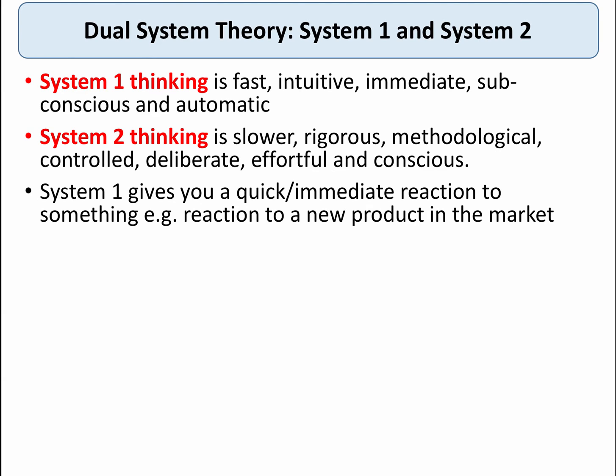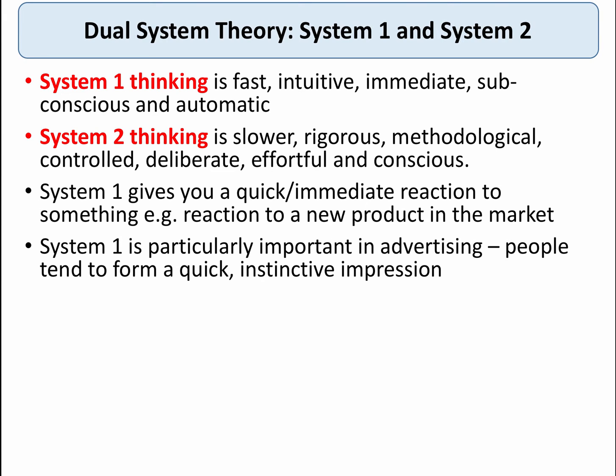System one gives you a very quick, immediate gut reaction to something — for example, how you react to a new product in the market. It's very important in advertising. People tend to form a very quick instinctive impression about some experience. Perhaps the first 30 seconds of their experience in a hotel has a disproportionate effect on how they think about their hotel experience and the whole holiday.